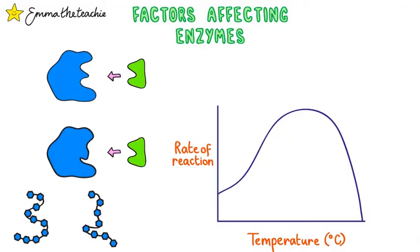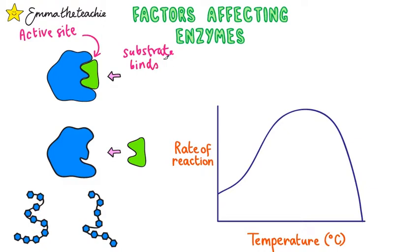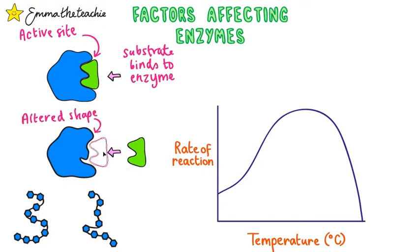Enzymes are a special type of protein that can catalyse reactions in living organisms. They do this by having an active site that is a specific shape for a substrate molecule to bind to. Keeping this specific shape is vital to the enzyme working properly — if the active site changes shape, the substrate can no longer bind to it.